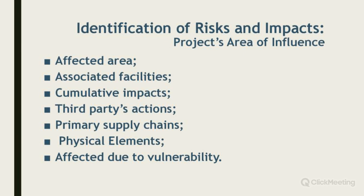Regarding the project-influenced area: this includes the area likely to be affected and associated facilities — for instance, a transmission line for a power plant investment project would be an associated facility. The project-influenced area also encompasses cumulative impacts, third-party actions, primary supply chains, physical elements affected, and people affected due to their vulnerability. All of these have to be identified as part of the project's area of influence.